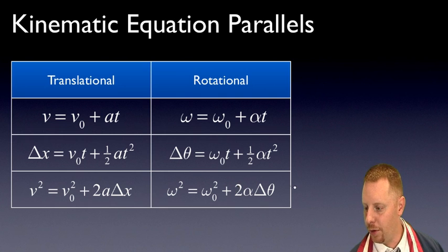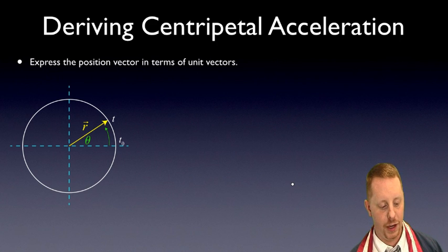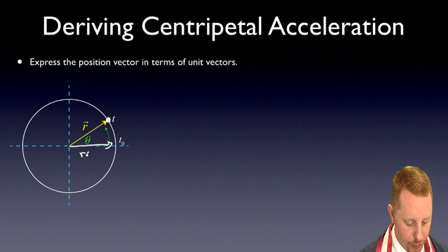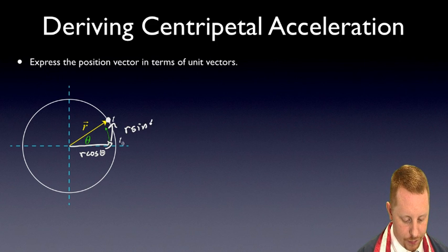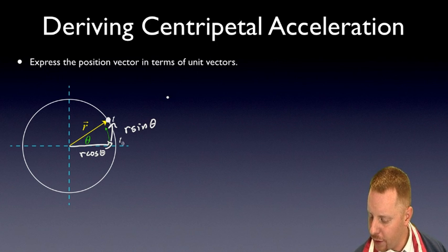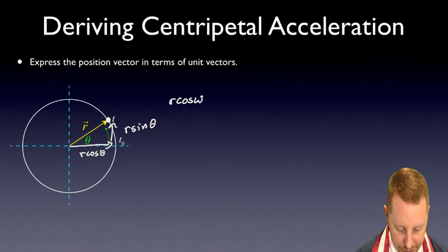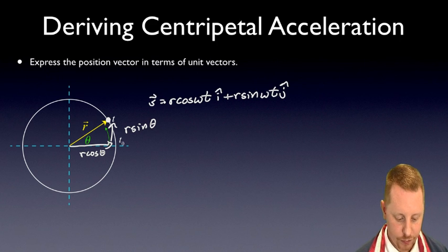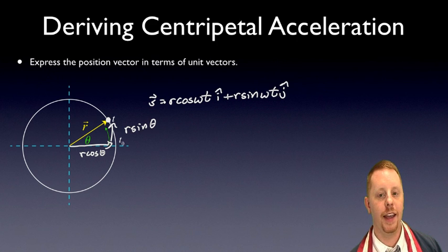Now let's derive the formula for centripetal acceleration by expressing the position vector in terms of unit vectors. For a point on a circle of radius R, the X component is R·cos(θ) in the î direction and the Y component is R·sin(θ) in the ĵ direction. Since θ = ωt for uniform circular motion, the position vector is: r(t) = R·cos(ωt)·î + R·sin(ωt)·ĵ.